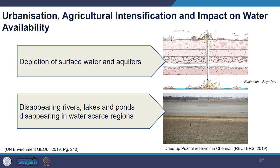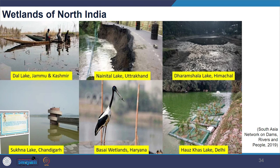Wetlands are being drained. Many rivers, lakes and ponds are completely disappearing in water-scarce regions. Despite their environmental significance and associated support services, wetlands have been subjected to degradation for many decades. We are continuously losing them and conditions are deteriorating, as seen in images of the present situation of wetlands in North India.